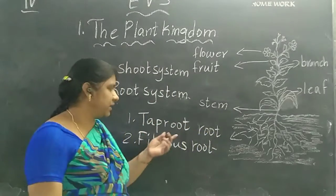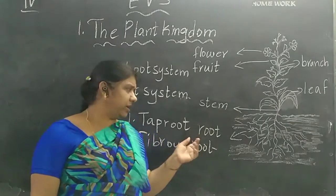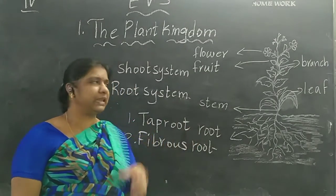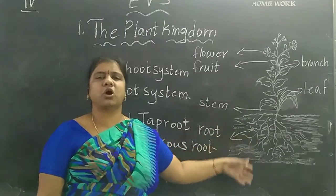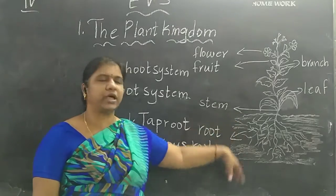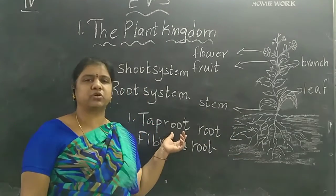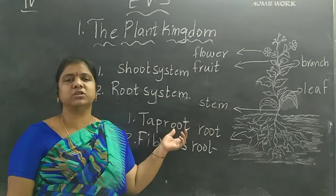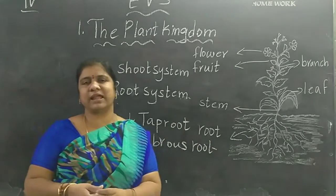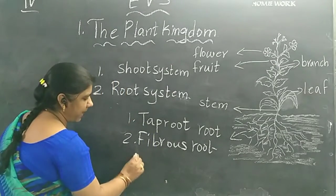The tap root is called the primary root. It is very thick and it grows vertically downward into the soil. The tap root has many small branch roots.